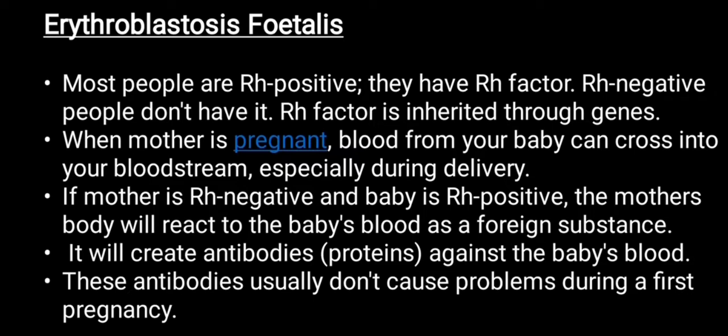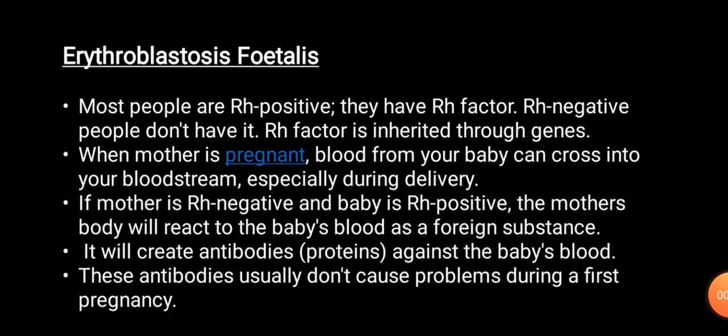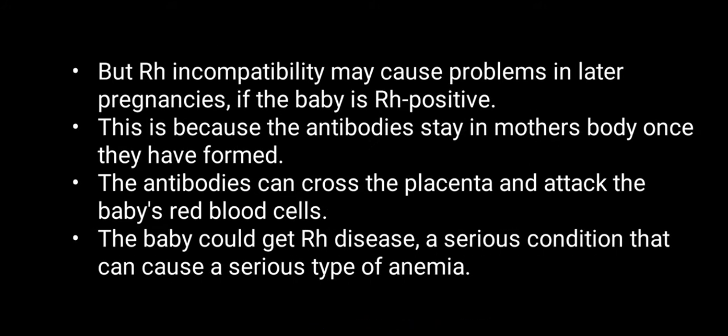If the mother is Rh negative and the baby is Rh positive, the mother's body will not accept the baby's blood. It considers it a foreign substance and immediately the mother's Rh negative blood starts to produce antibodies against the Rh positive antigen of the baby. However, these antibodies usually don't create much problem during the first pregnancy — the first child comes out without causing much harm.